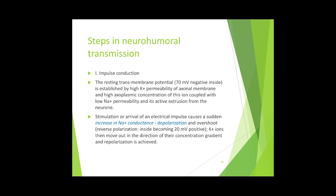Regarding impulse conduction: the resting transmembrane potential is minus 70 millivolts — negative inside the membrane — established by high potassium permeability of the axonal membrane and high axoplasmic concentration of potassium coupled with low sodium permeability. Stimulation or arrival of an electric impulse causes a sudden increase in sodium conductance, which is depolarization — sodium ions come inside and potassium ions go out of the cell.